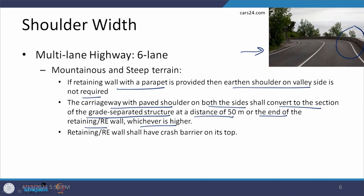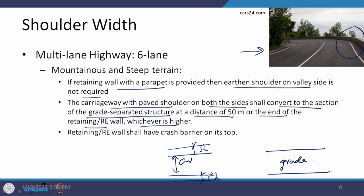What this means is that when you are approaching a grade separated structure, you have a carriageway with shoulders on either side, but the grade separated structure may not have an earthen shoulder. There may be a possibility of providing a paved shoulder if space is available. So the section needs to converge to the section of the grade separated structure 50 meters before the start of that structure. This flare brings the section into the condition that matches the grade separated structure section.